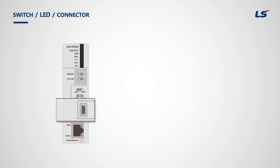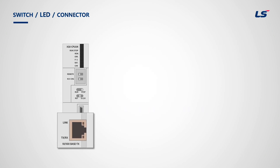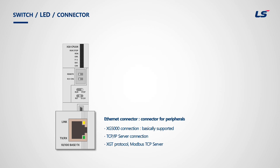Right below the switches, there is a USB connector, which is a connector for XG5000. The network-type CPU also has an Ethernet connector. Users can connect with XG5000 or use this port as a TCP/IP server, but users need to be aware that this port can only serve as a server.